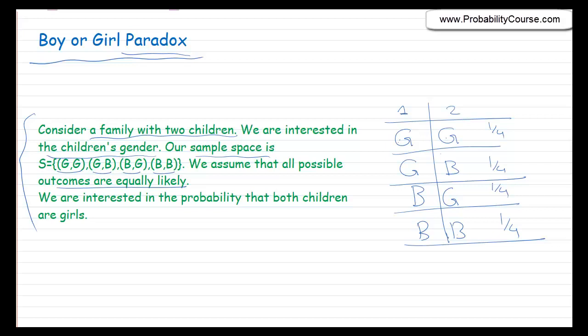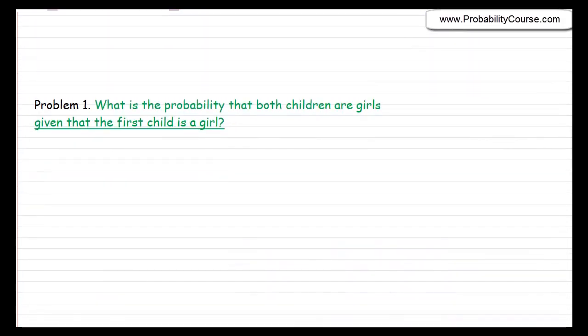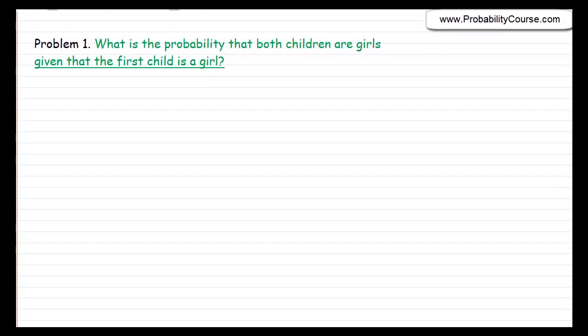Our sample space is {girl-girl, girl-boy, boy-girl, boy-boy} and we assume all outcomes are equally likely with probability 1/4 each. We are interested in the probability that both children are girls given some extra information. It looks as if each family tosses two coins and the result of each coin toss determines the gender of each child.